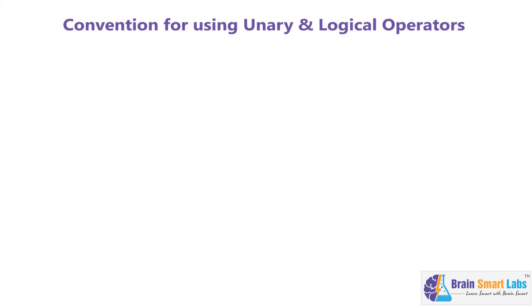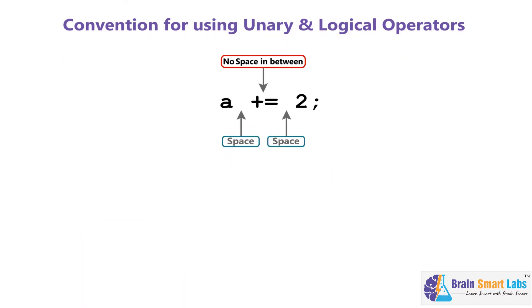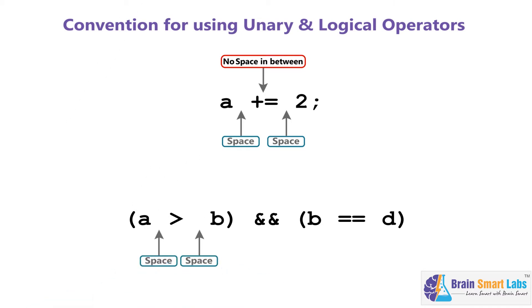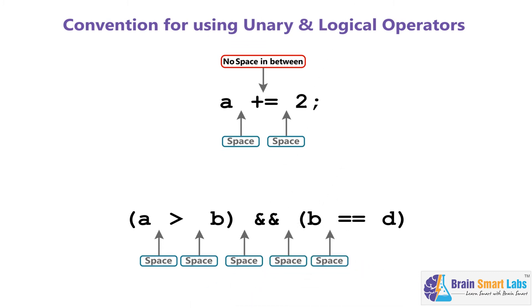What about unary operators? Unary operators always use two symbols, and the same applies in logical operators. While performing any operation using unary operators, always use a space to the operator's left and to its right, but not to its center. The two symbols used in a unary operation act as a single unit. Likewise, in a logical expression, spaces go on the outer sides of each operator, but no space between the two symbols of the operator, as they act as a single unit.